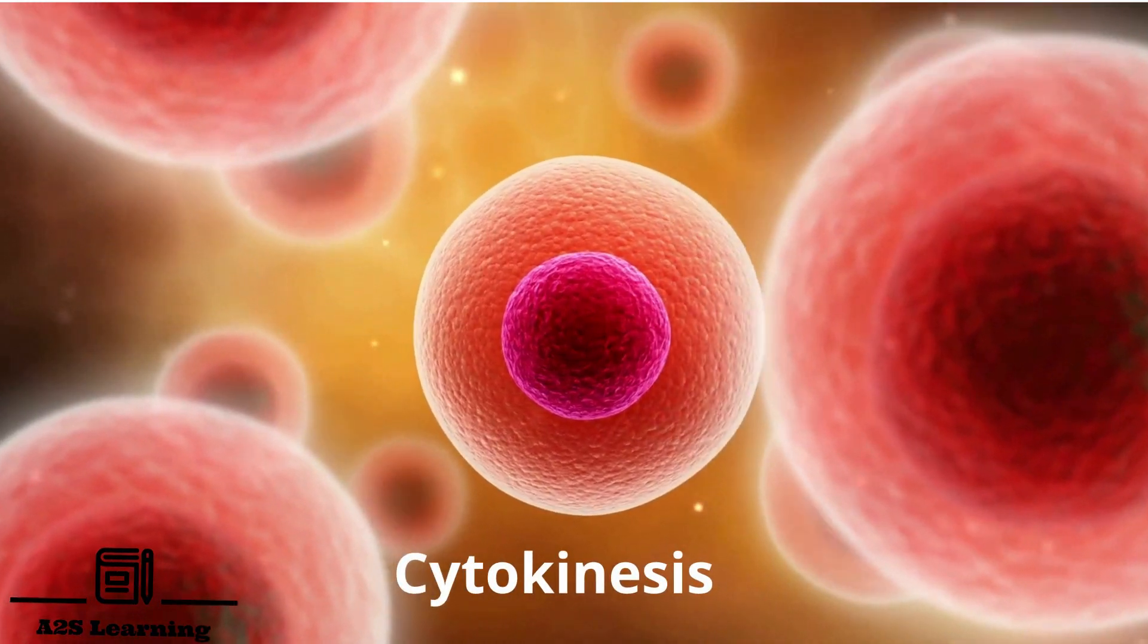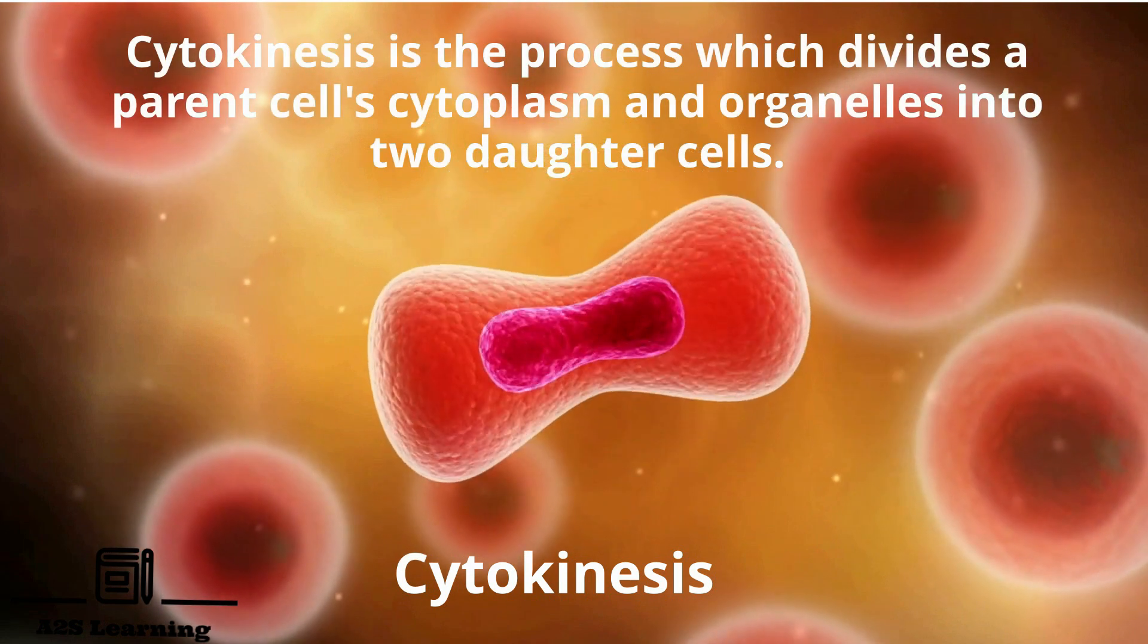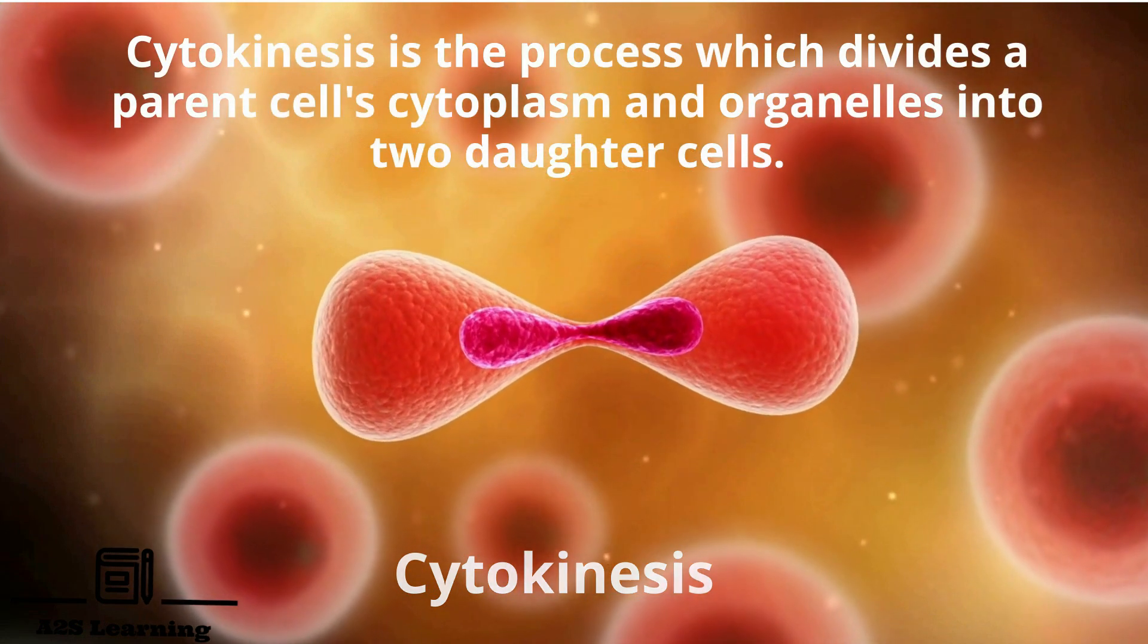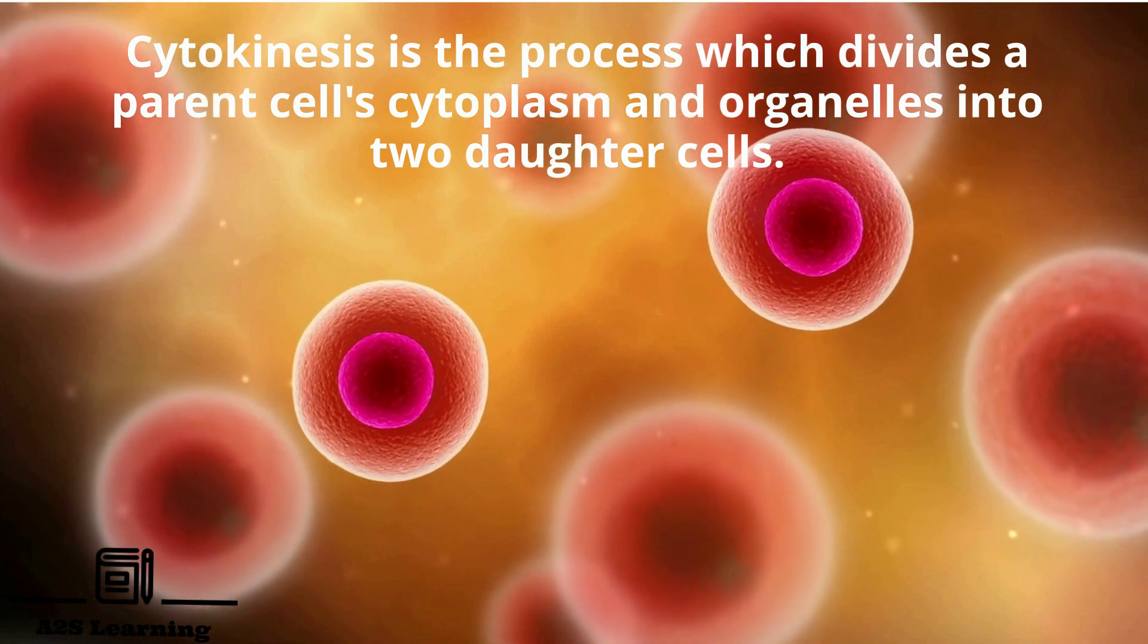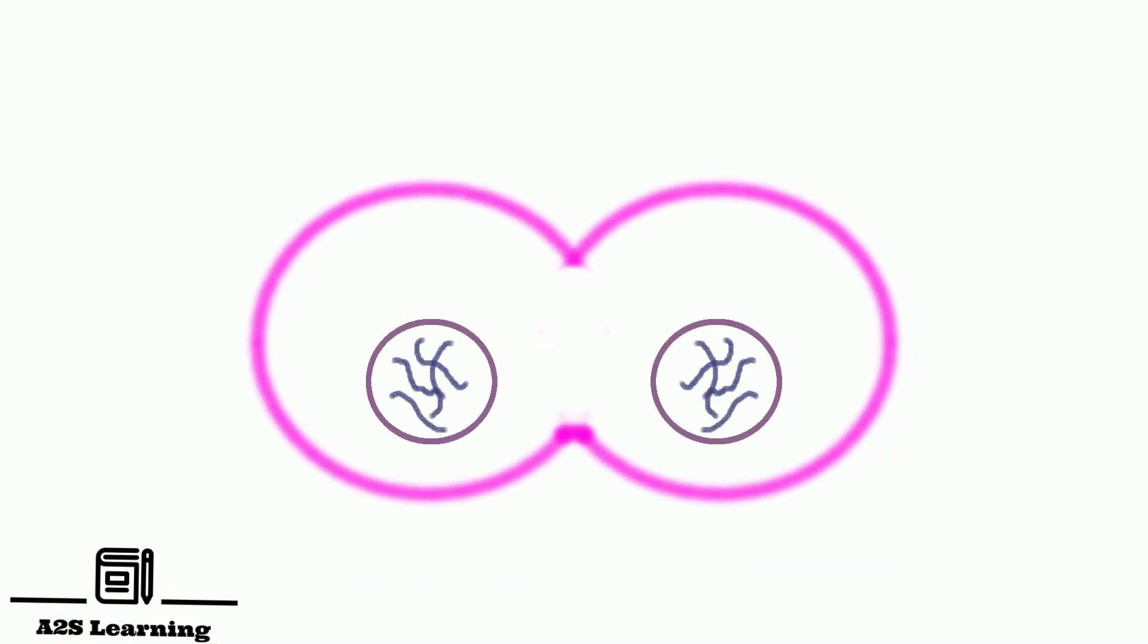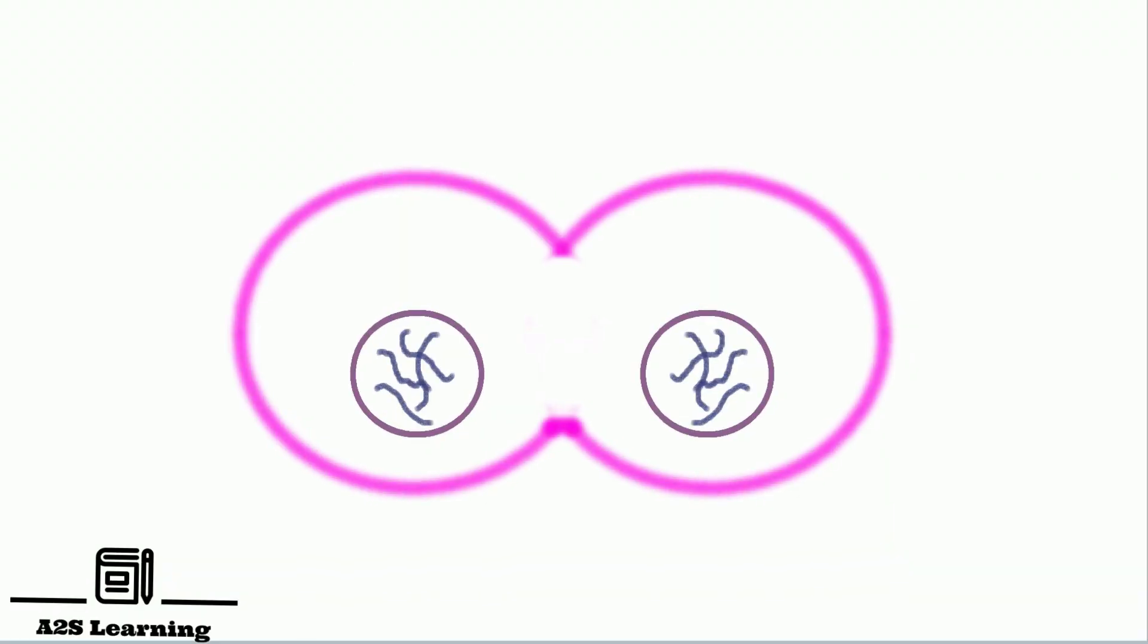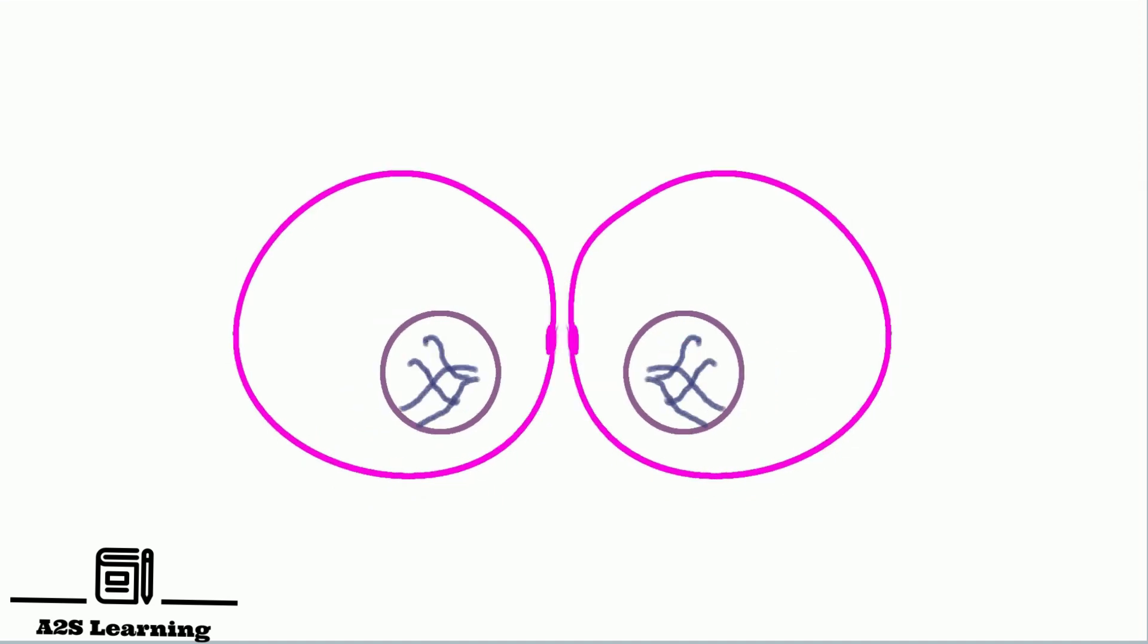Cytokinesis is the last stage of mitosis, which completes cell division. Cytokinesis is the process which divides a parent cell cytoplasm and organelles into two daughter cells. In animal cells, this is accomplished by formation of cleavage furrow in the plasma membrane. The furrow gradually deepens and ultimately joins in the center dividing the cell's cytoplasm into two.